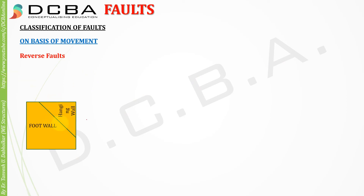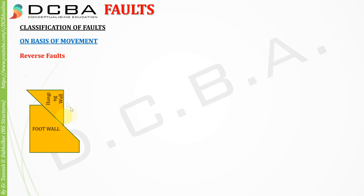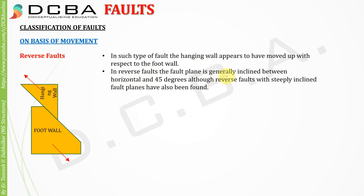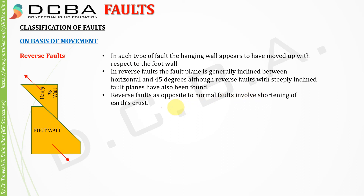Reverse fault: in a normal fault the hanging wall moves down with respect to the foot wall; here the hanging wall moves up apparently with respect to the foot wall. In such a type of fault the hanging wall appears to have moved up with respect to the foot wall. In reverse faults the fault plane is generally inclined between horizontal and 45 degrees, although reverse faults with steeply inclined fault planes have also been formed. Reverse fault, as opposite to normal fault, involves shortening of the earth's crust.